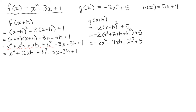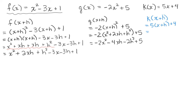For the third function, I'm going to rename H of X as K of X so it doesn't get confused with the letter H used in X plus H. So if we have K of X plus H, we replace the X in 5X plus 4 with X plus H, giving us 5 times the quantity X plus H, plus 4. Using the distributive property, that's 5X plus 5H plus 4, and that is K of X plus H.